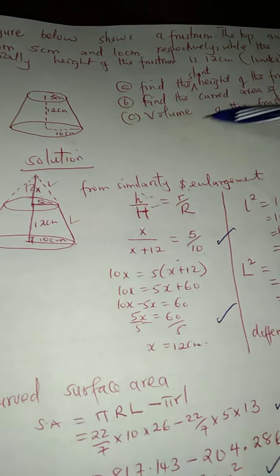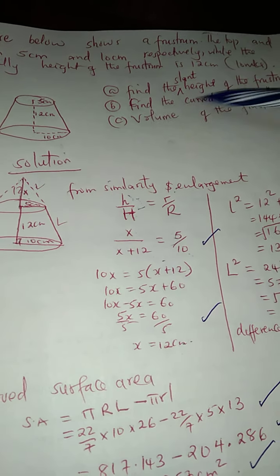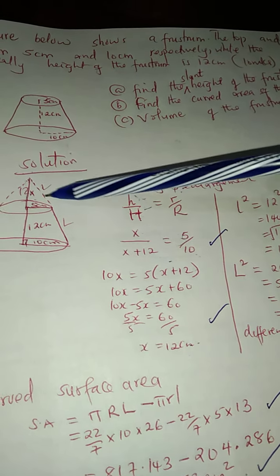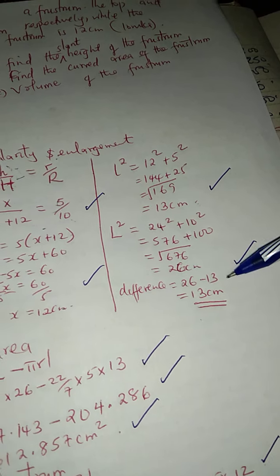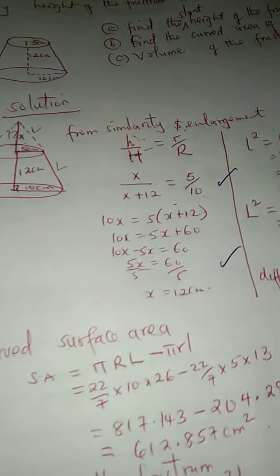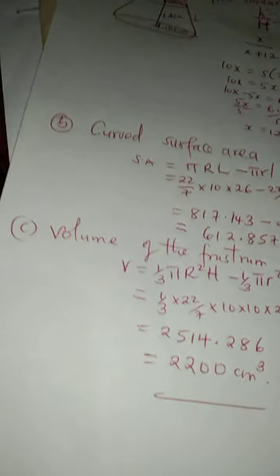But the question was, find the slant height of the frustrum, not the whole cone. The whole cone is 26, but the one that was removed is 13. So the remainder is 13. 26 minus 13, 13 cm. You get your 4 marks.